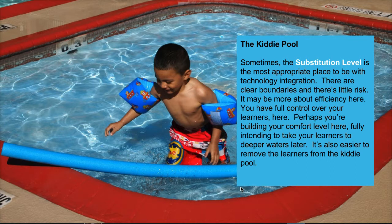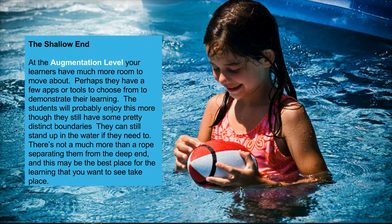Now let's look at what happens when we go into the big pool — the shallow end. This is like the augmentation level. Your learners have a lot more room to move about in the pool. You've given them options of technology tools to use — maybe they can choose to create a presentation, a field guide, a document, whatever. You give them lots of options, but you're still there directing the process. They get to choose and have more freedom, but everybody's still really safe. It's a little deeper — they can do more things. But if they get worried, they can still put their feet on the ground and stand up. And notice there's not much separating you from the deep end of the pool — it's really just a rope.